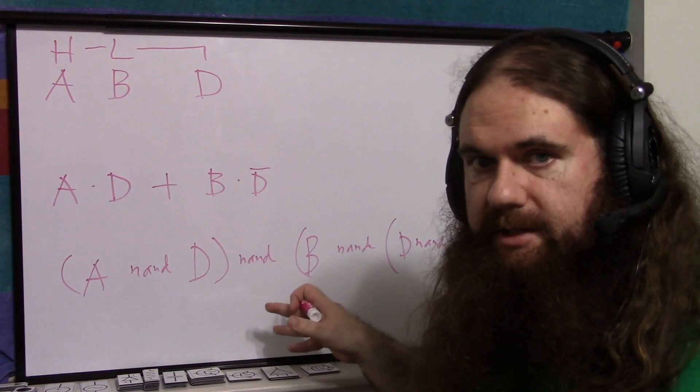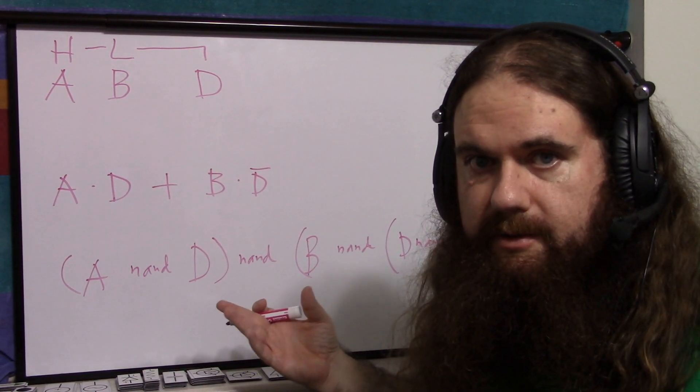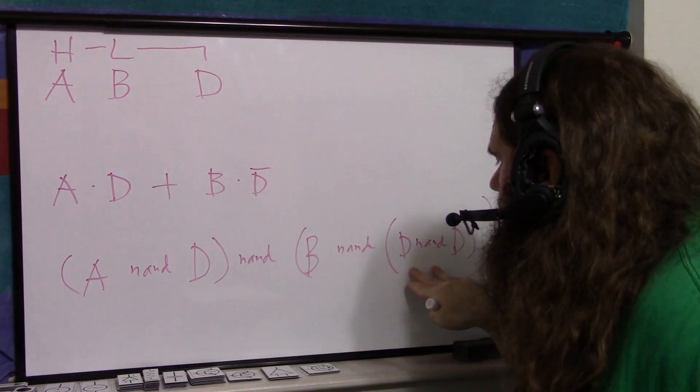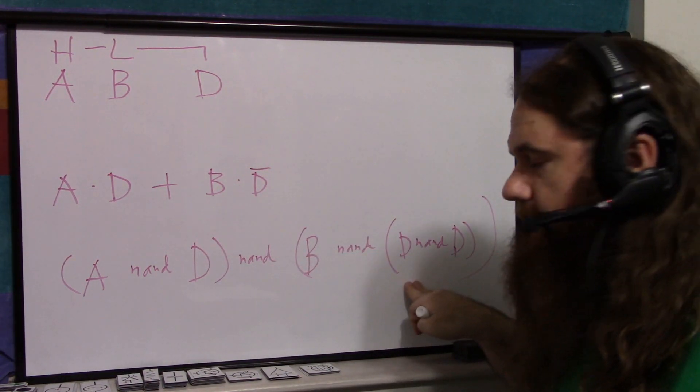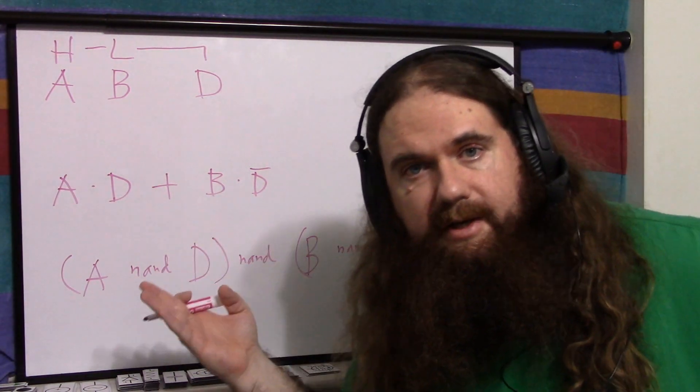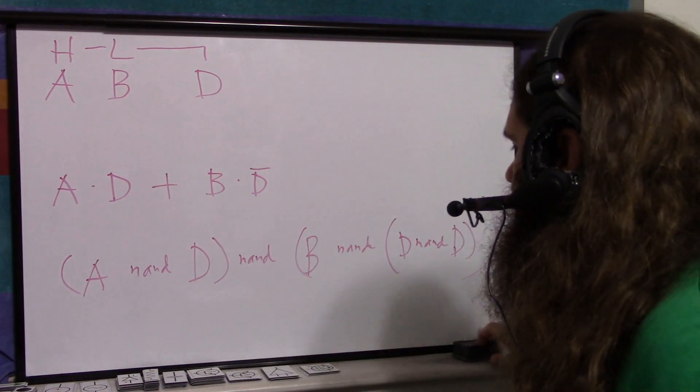And if you do it with discrete BJTs, it's eight transistors, because it's two series NPNs for a NAND gate. But if you're using discrete transistors, you don't need to do D NAND D, it's just D inverted. So it would actually be seven, seven transistors. So that's pretty handy.